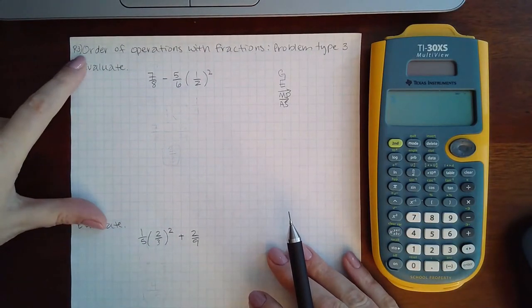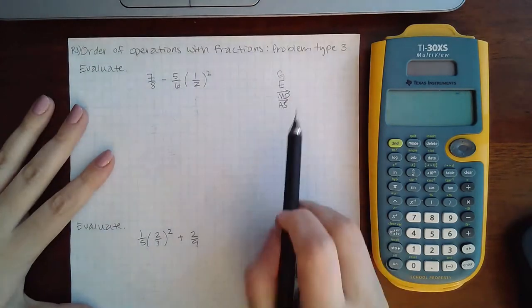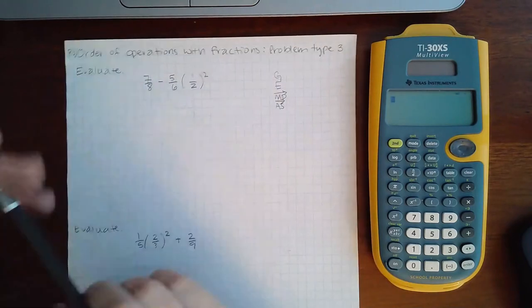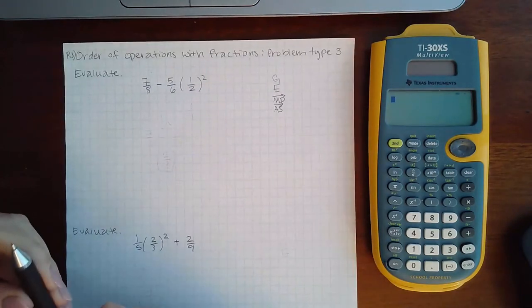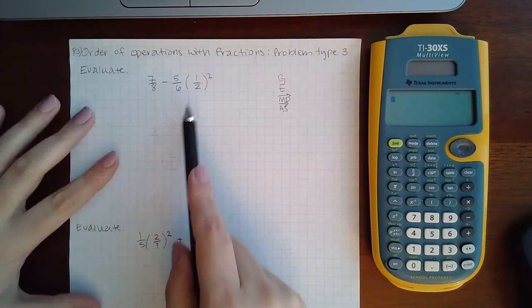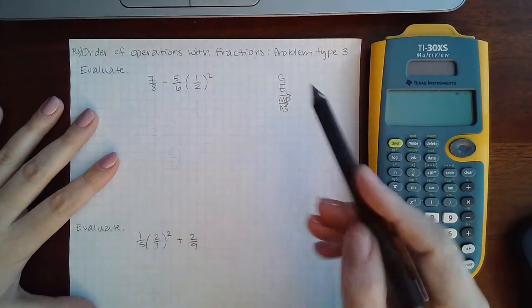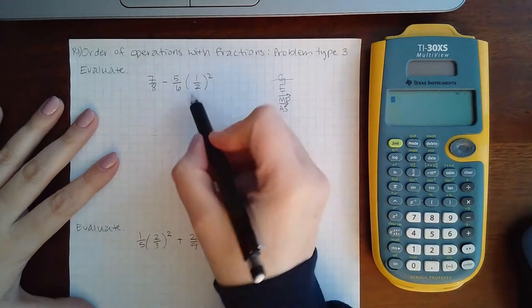This is chapter R section 3, topic is order of operations with fractions problem type 3. We have a parentheses but it's not a grouping because there's nothing more in here than just one fraction. There's nothing to do inside this parentheses so we're going to go to the next step which is evaluate.